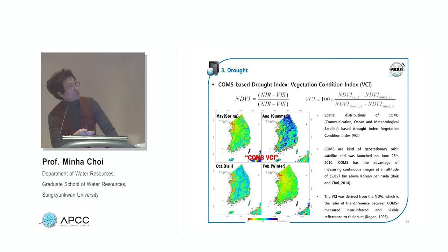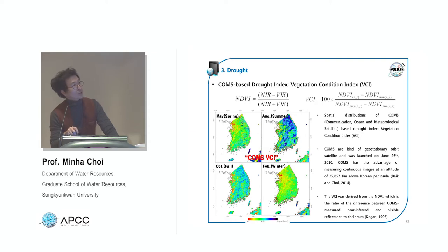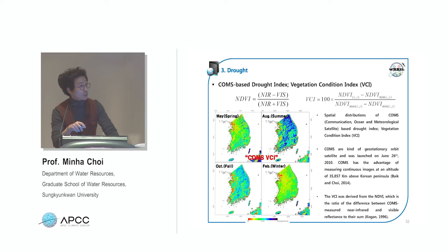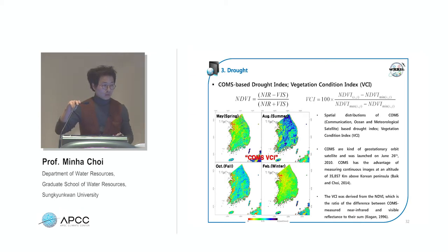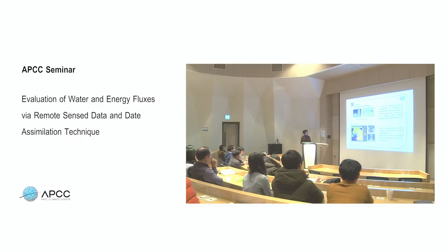We also use the COMS satellite Vegetation Condition Index (VCI) to provide a drought index. The COMS dataset provides data every 30 minutes, allowing gap-filling for urbanized areas where MODIS data is missing. We are currently working on a collaboration combining MODIS and COMS datasets, since each has its own advantages and disadvantages, to extract the best values from each source.